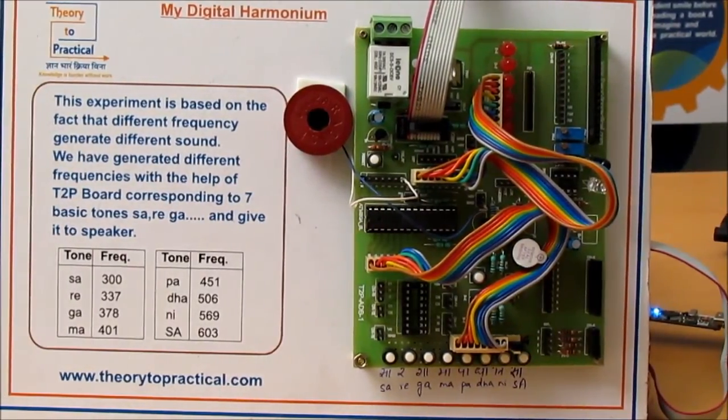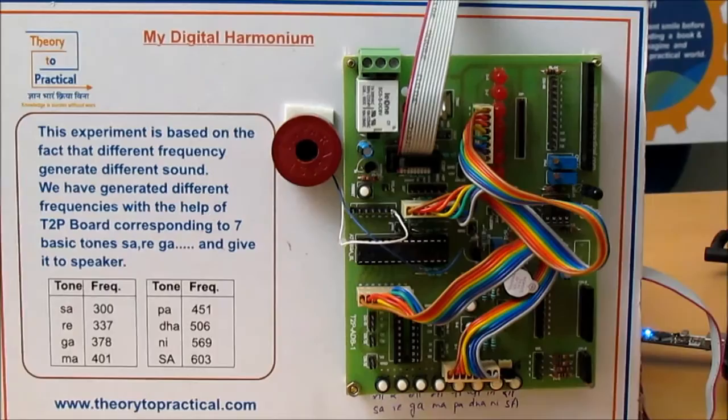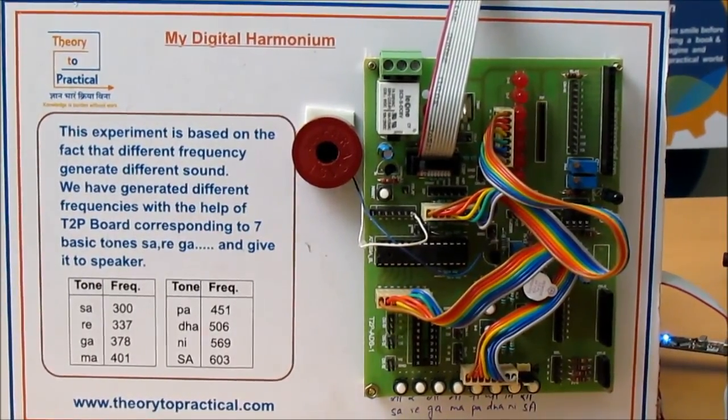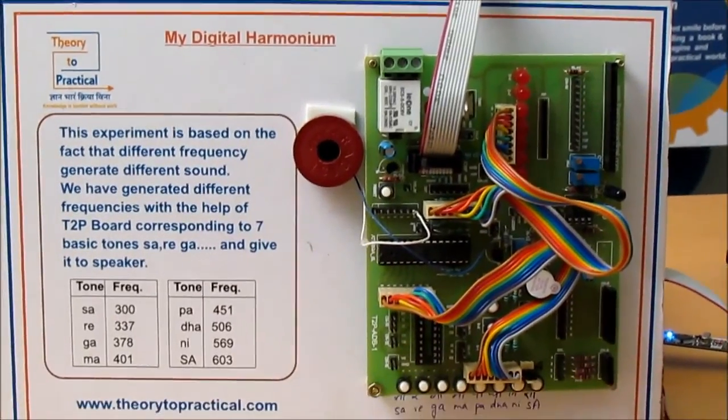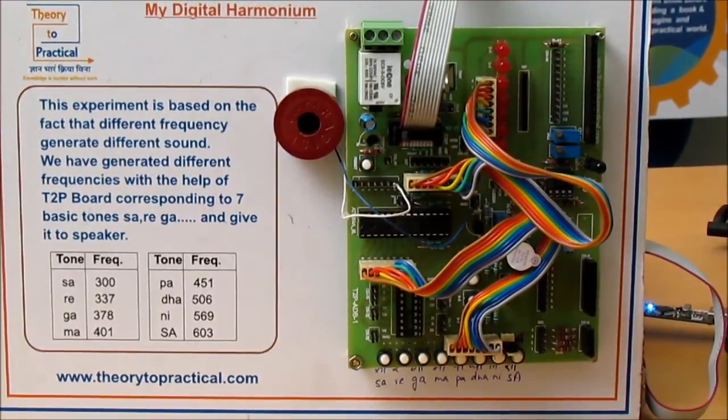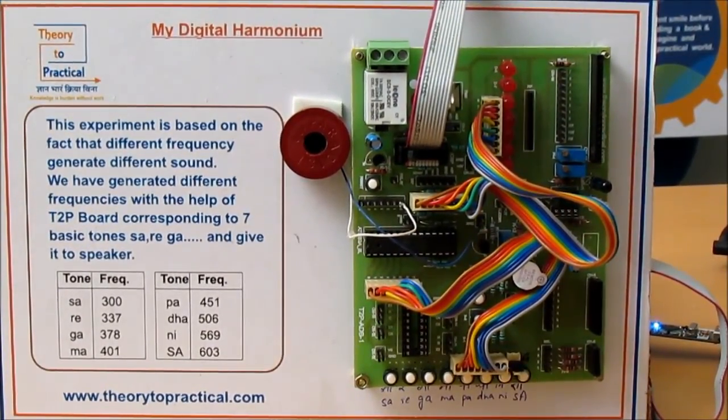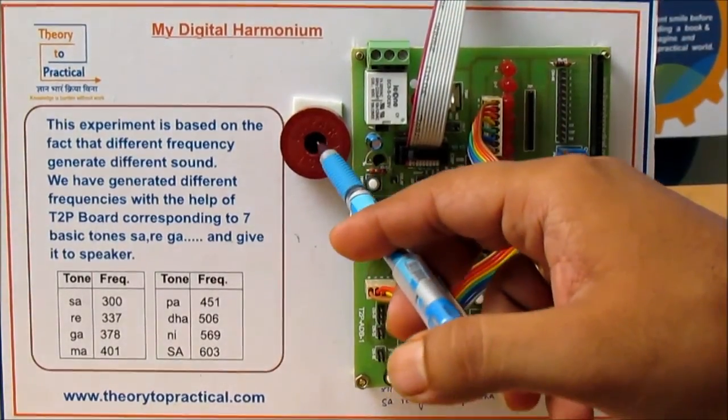We have made an electronic harmonium based on the theory of our school books. So friends, let's discuss how to make such a harmonium. It is very easy and interesting. All you require is our T2P board, this development board, and a mobile speaker. We have covered it with a plastic clip for better sound.